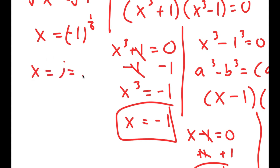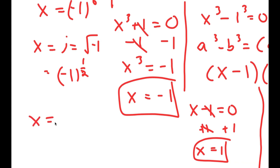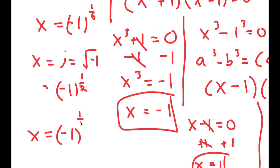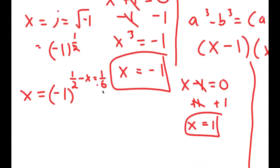We know that i is equal to the square root of negative 1, which is equal to negative 1 to the power of 1 half. So negative 1 to the power of 1 over 6 — we can note that 1 half minus 1 over 3 is equal to 1 over 6, meaning 1 over 6 plus 1 over 3 equals 1 half.